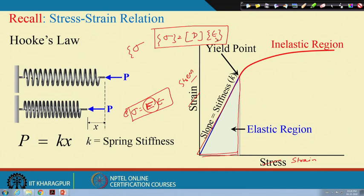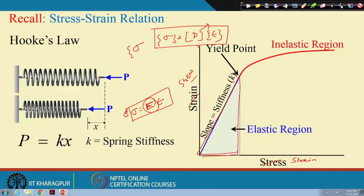This matrix D is called the constitutive matrix, and this relation is called the constitutive relation. So we have now revisited stress, strain components, how strain relates to displacement, and how stress relates to strain through the constitutive matrix D.